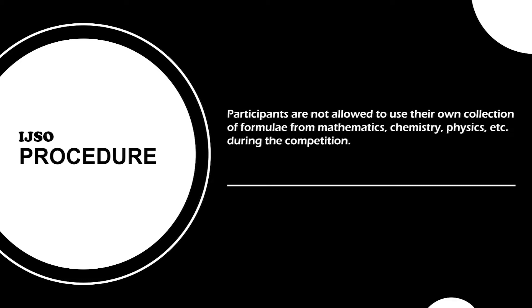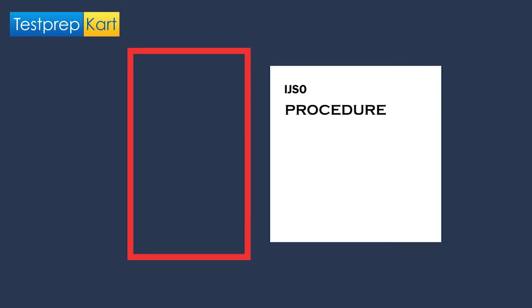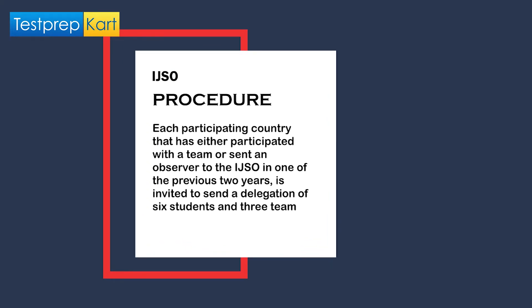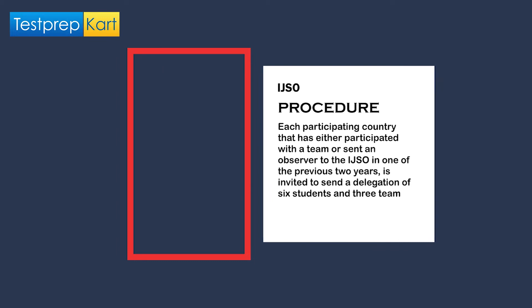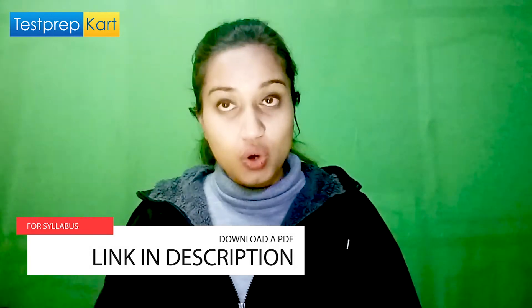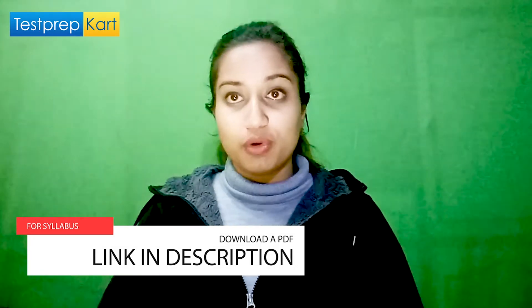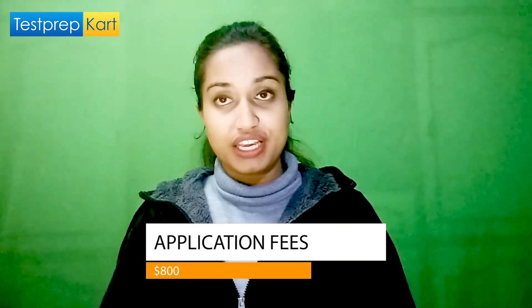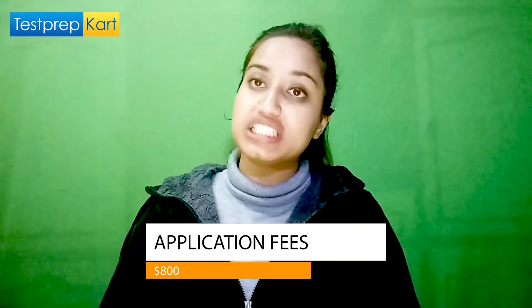Participants are not allowed to use their own collection of formulas from mathematics, chemistry, physics, etc. during the competition. Each participating country that has either participated with a team or sent an observer to the IJSO in one of the previous two years is invited to send a delegation of six students and three team leaders. For the syllabus, you can download the PDF from the description box. The application fee is $800 per team.